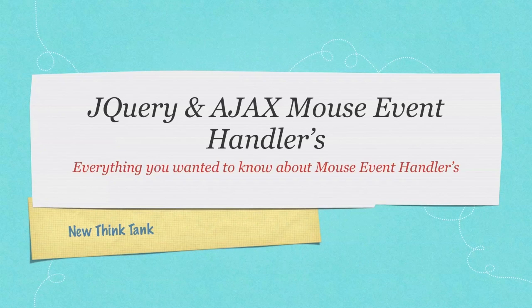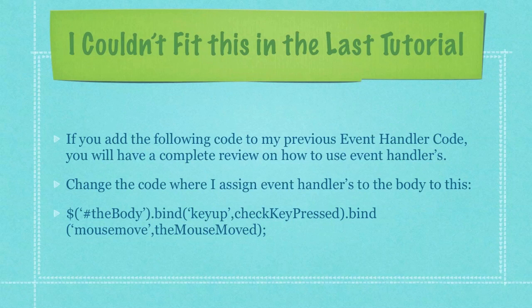Now, because I forgot about it in the previous tutorial, I'm going to show you exactly how to add mouse event handlers. If you add the following code to my previous event handler code, you will have a complete review on how to use event handlers. Change the code where I assign event handlers to the body to this. As you can see, I just added an additional event handler, being mouse move, to the body element, and whenever a mouse movement is detected, I will call the function the_mouse_moved.